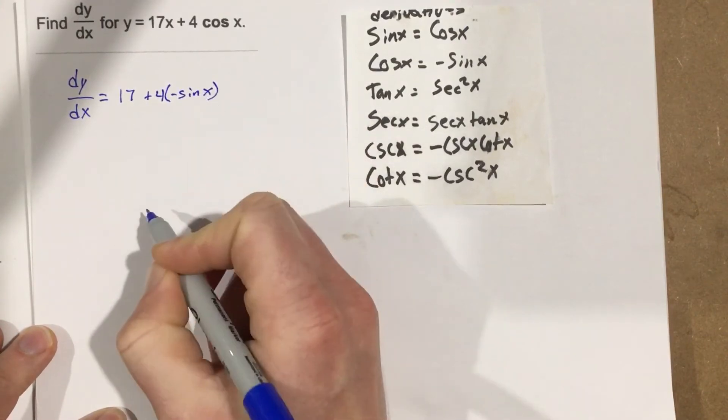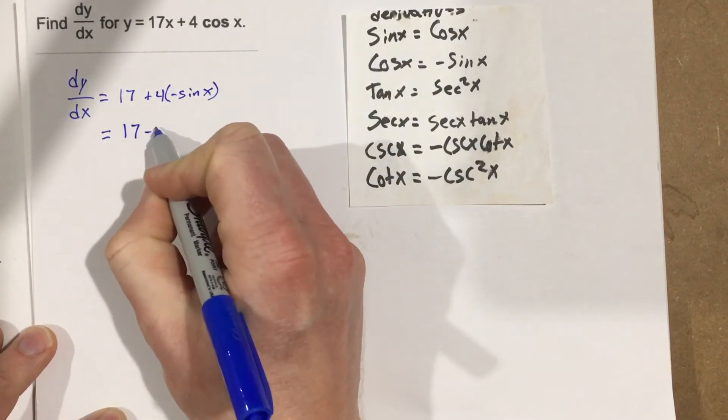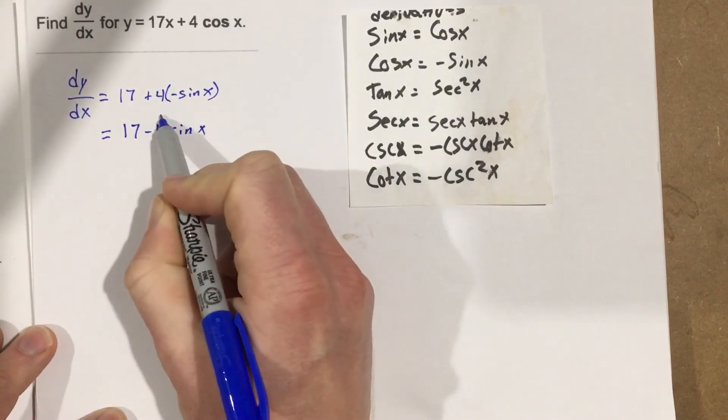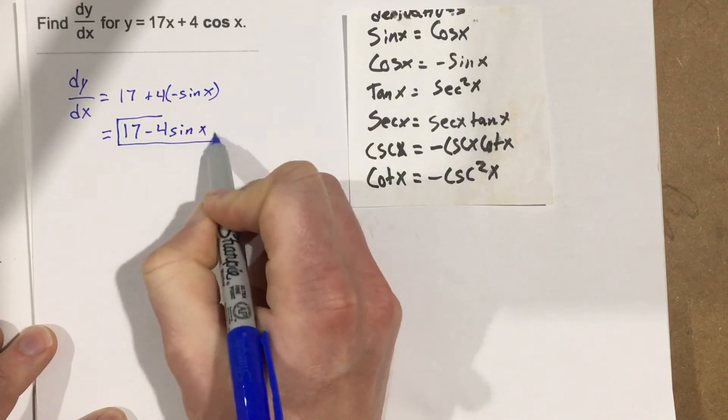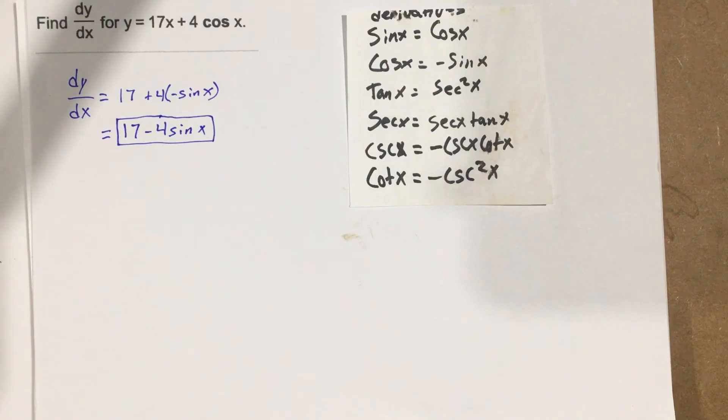which is going to equal, and I simplify that, 17 minus 4 sine x. So 17 minus 4 sine x is the derivative of the equation y equals 17x plus 4 cosine x.